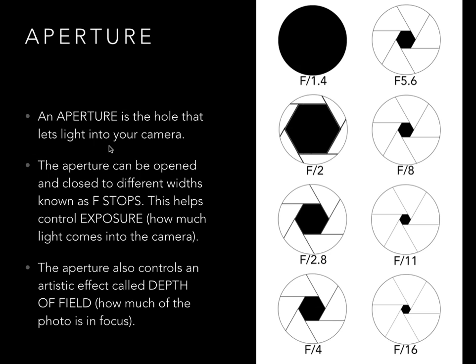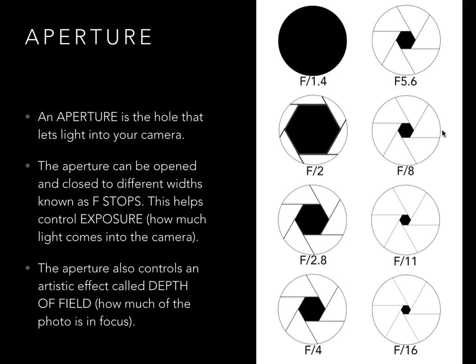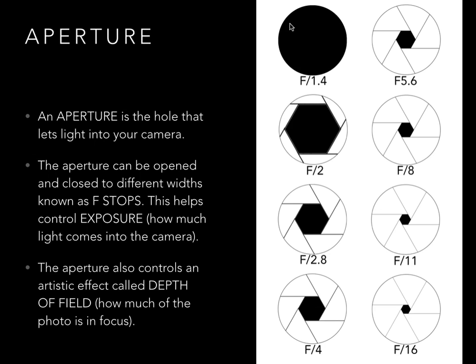Let's look at aperture first. An aperture is the hole that lets light into your camera. The aperture can be opened and closed to different widths known as f-stops. Looking at the diagram, the smaller the number the larger or wider the aperture, and the wider the aperture the more light being let into your camera, resulting in a lighter, more exposed image. Smaller holes like f-16 and f-11 let in less light, producing a darker image. F-stops also control an artistic effect called depth of field — how deeply we can see the space in our photo, or how much of the depth is actually in focus.